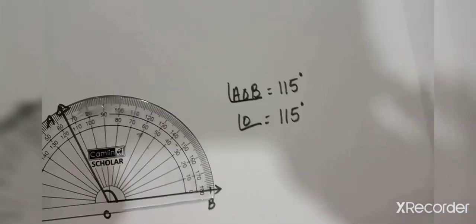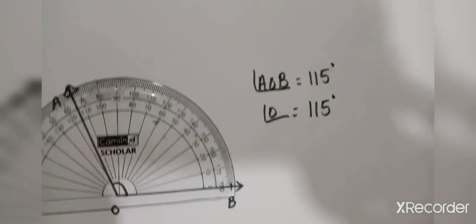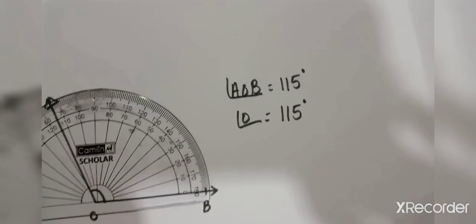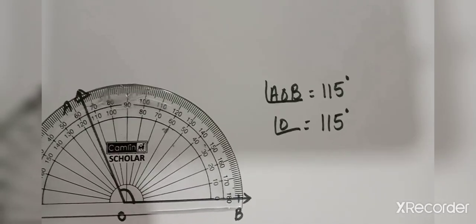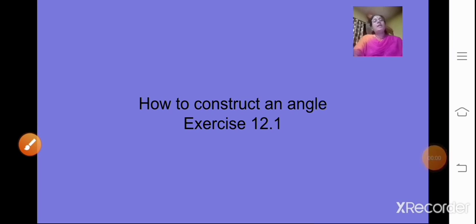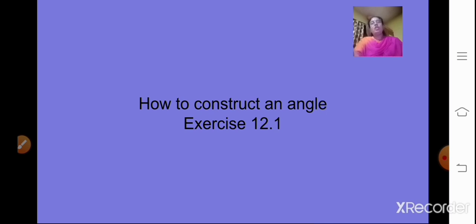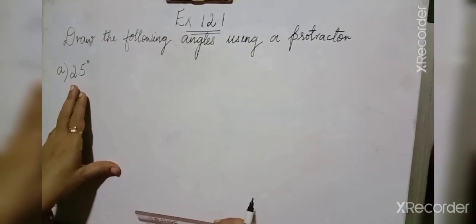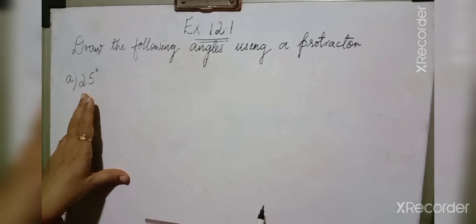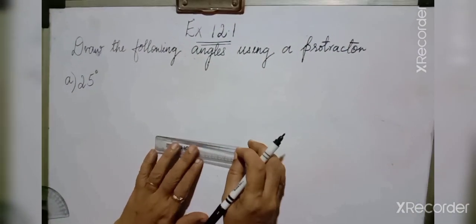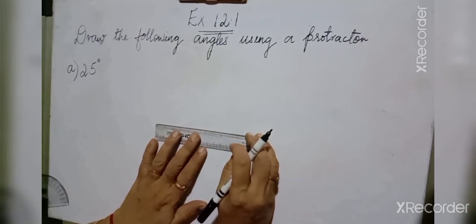I hope students you all have understood how to measure an angle. In the next part we will learn how to construct an angle using a protractor. Now let us see how to draw or construct the following angles using a protractor. Some of the examples are taken from exercise 12.1, so you have to do these in your notebook. Let us learn how to construct an angle of 25 degrees using a protractor.